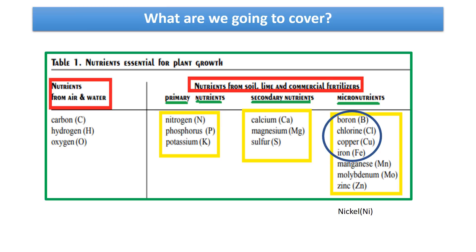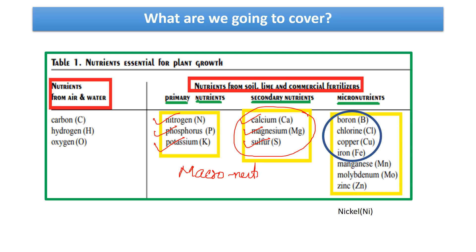As part of the earlier video, there was an elaborate discussion on the primary nutrients nitrogen, phosphorus and potassium, and we also discussed three secondary nutrients: calcium, magnesium and sulfur. Both primary and secondary nutrients come under macronutrients. In today's video, we shall be discussing four micronutrients: boron, chlorine, copper and iron.